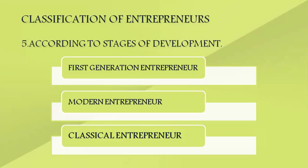According to stages of development, we have first generation, modern, and classical entrepreneurs. A first generation entrepreneur is usually an innovator who starts a business or industrial unit using different technologies and combinations of product and market, and others then imitate them. Modern entrepreneurs undertake activities already present in the market and adapt as per market requirements. Classical entrepreneurs are the stereotype — present in the market mainly to maximize economic return and make profit, dealing with customers.